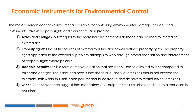Tradable Permits: This is a form of market creation. The basic idea is that the total quantity of emissions should not exceed the tolerable limit. Within this limit, each polluter should be free to decide how to restrict emissions. Each polluter decides whether to reduce pollution and sell the permits, or pollute and buy permits, or pollute and pay penalties. Based on cost and price signals, polluters can benefit from exchanging credits of extra emission reduction with others. The key is that non-compliance would lead to penalties — for example, cap and trade.